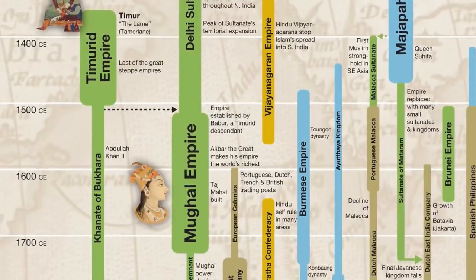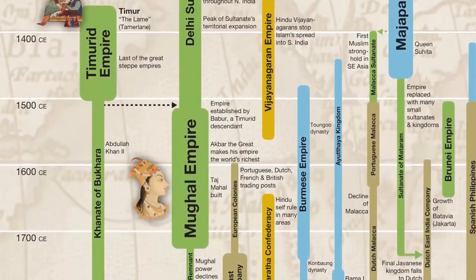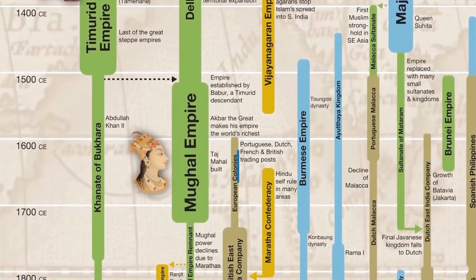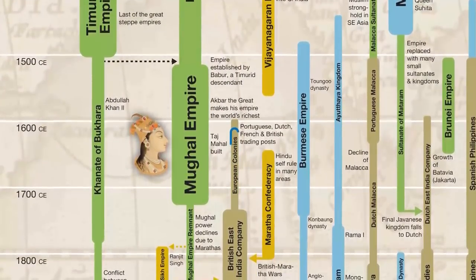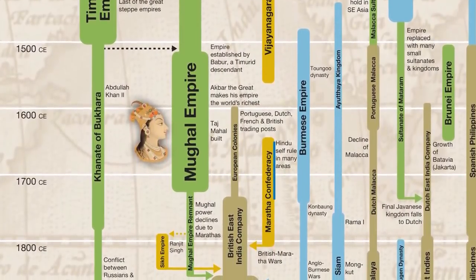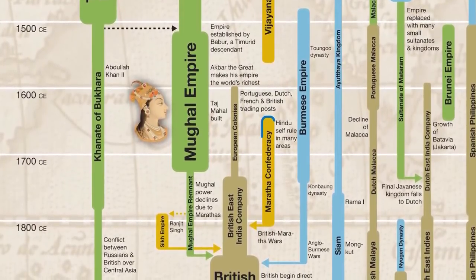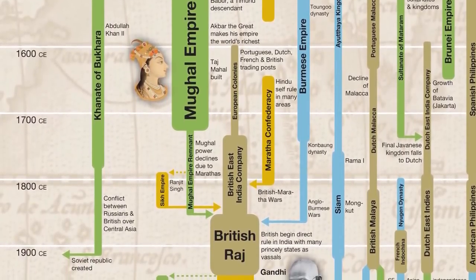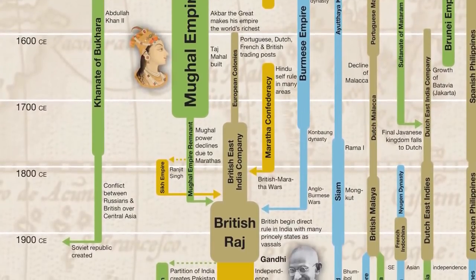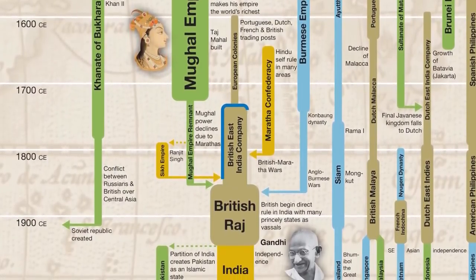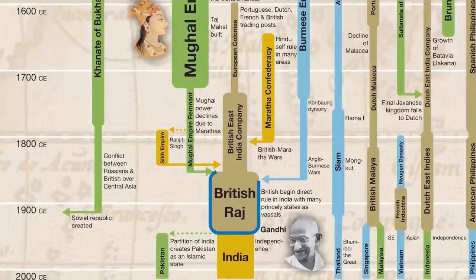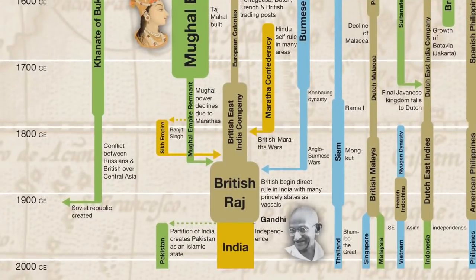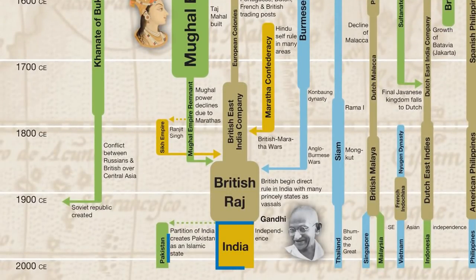But shortly after the Taj Mahal was built, things started to get more complicated on the Indian subcontinent. Several European colonial powers had arrived and were starting to establish trading posts along the coasts. And secondly, the Hindu Marathas were starting to achieve independence and were building an empire that would eventually eclipse the Mughals. The three-way power struggle between the Mughals, Marathas, and Europeans was eventually won by the Europeans, with the British establishing direct rule in India in 1858. This lasted until after World War II, when India received independence and split into the majority Hindu India and the majority Muslim Pakistan.